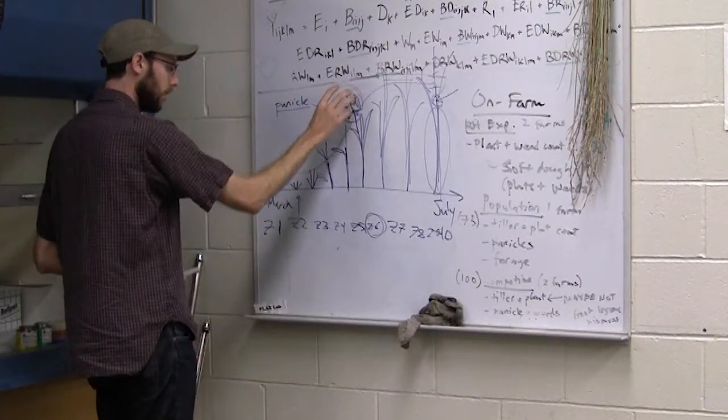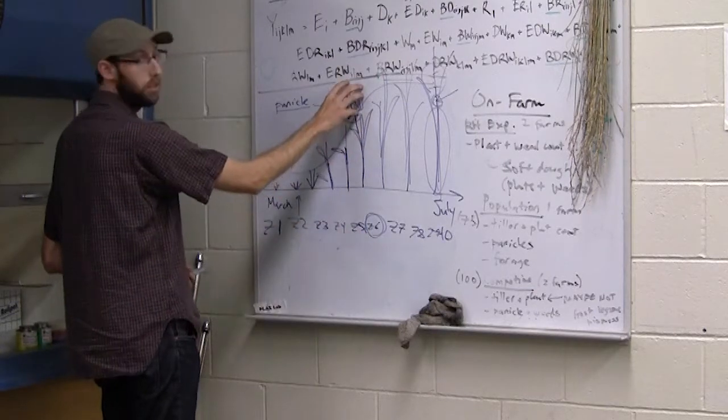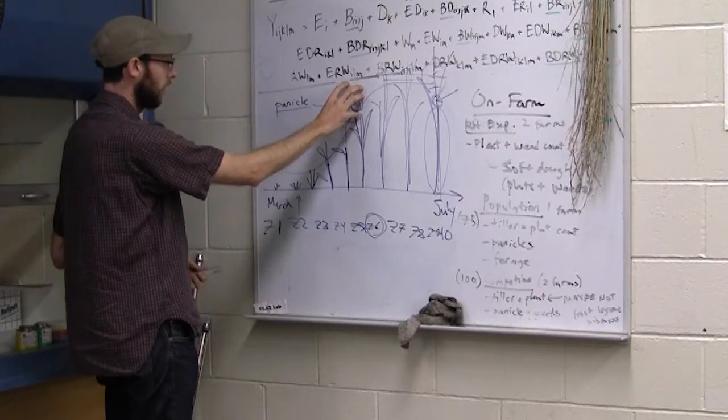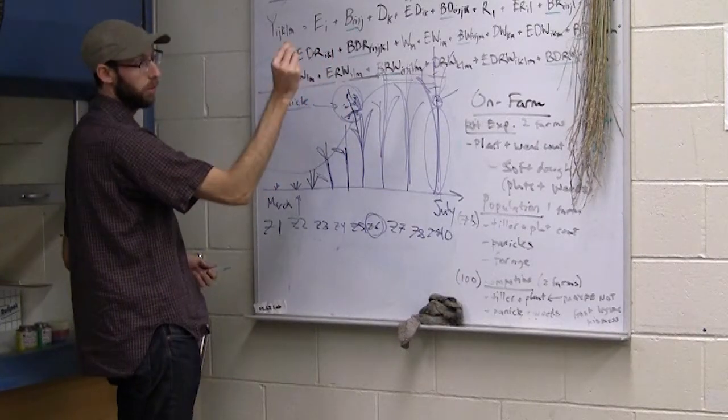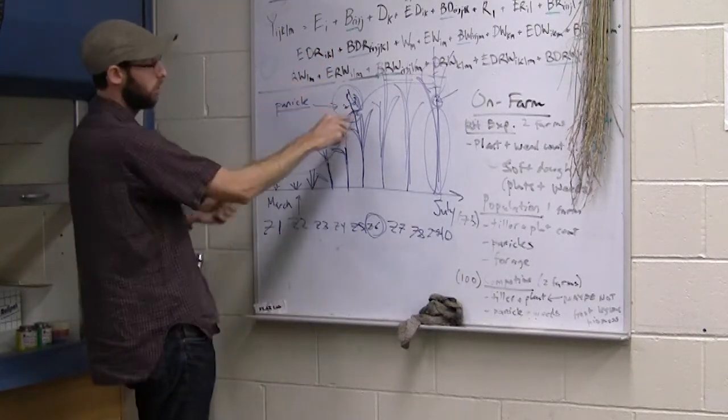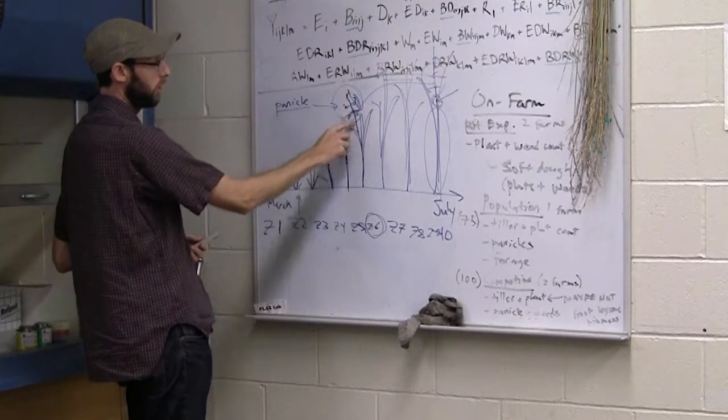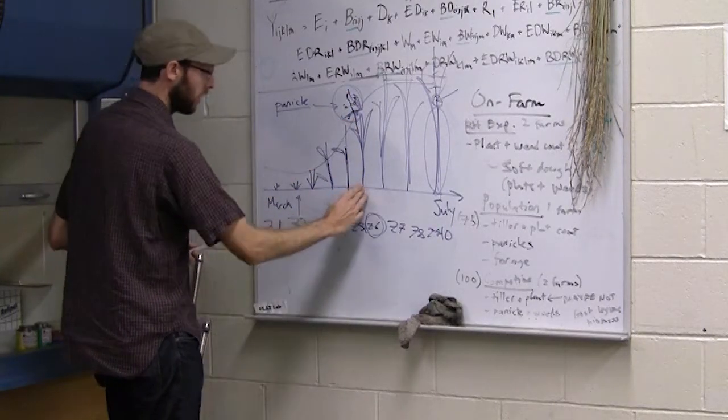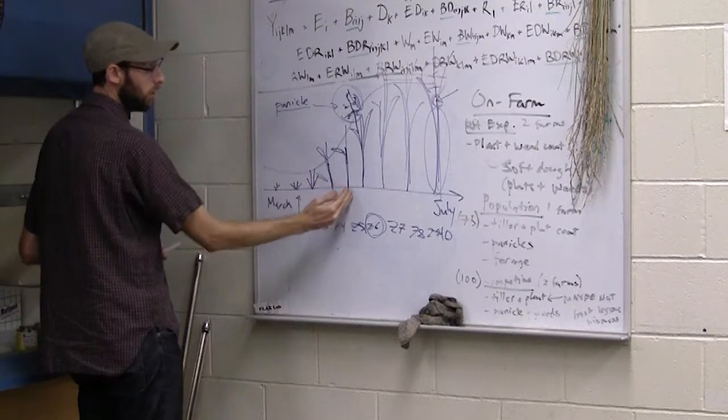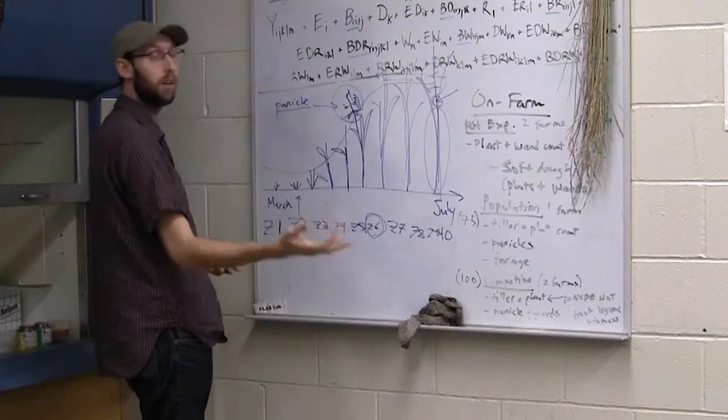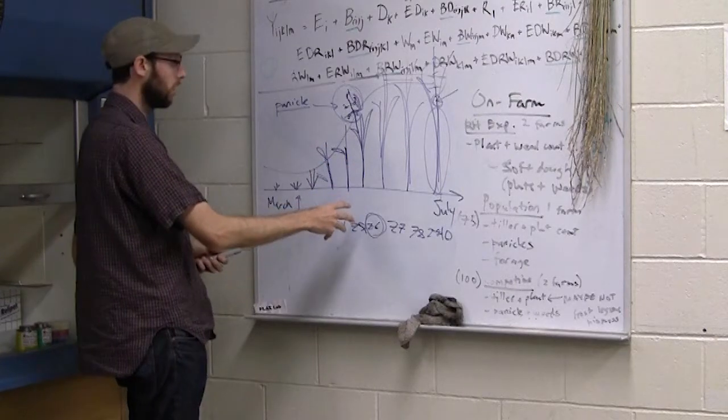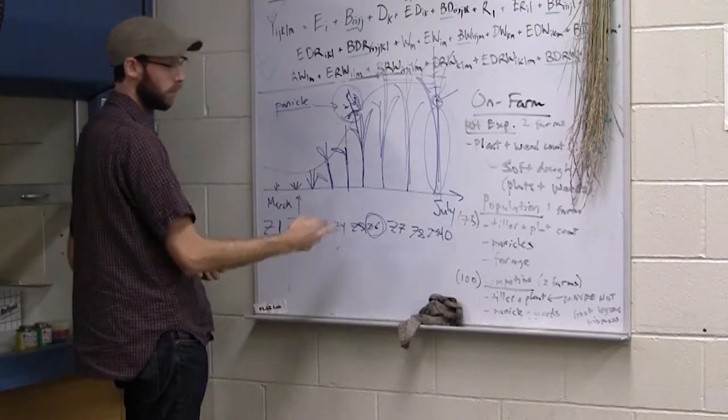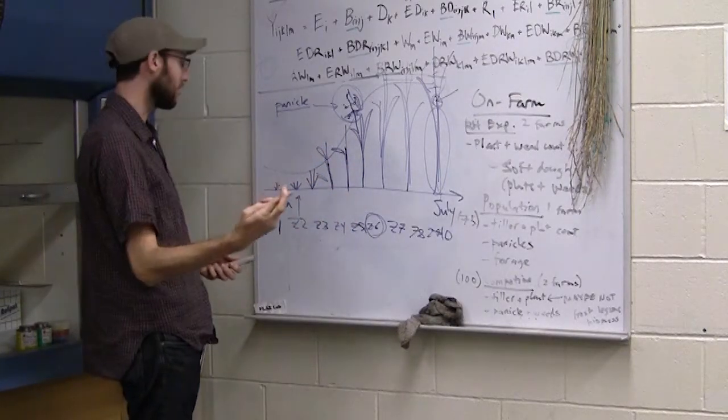I want to come back to this Z6 anthesis for just one more second here. So we've got this panicle that's emerged and we've got the anthers that are extruded. They're coming out of those floral structures on the grain seed head there. The earlier that this can happen in the season, the less likely you're going to have some sort of heat stress related damage.